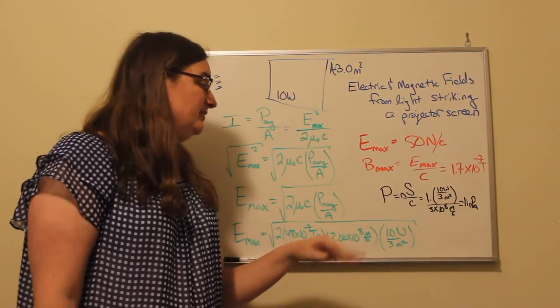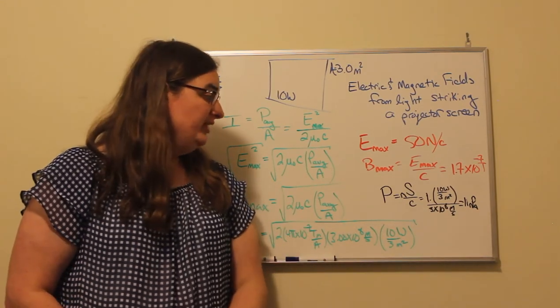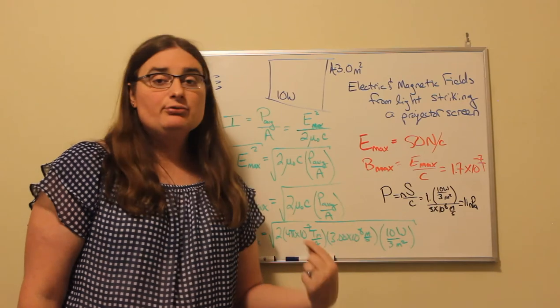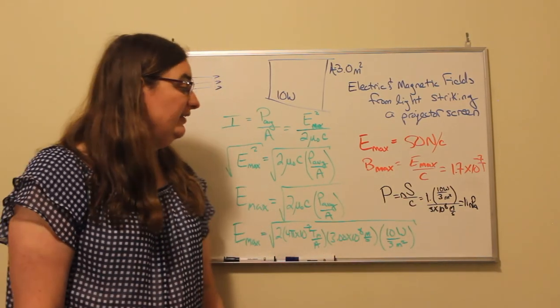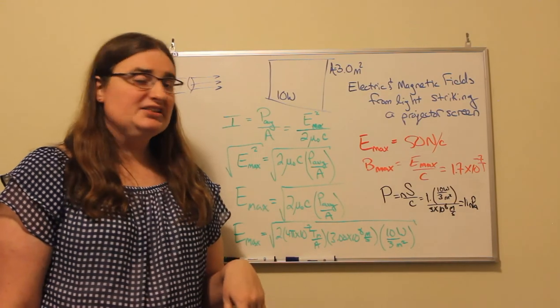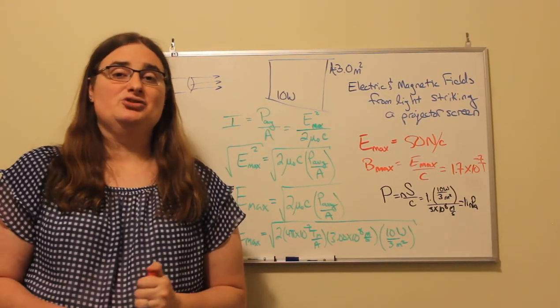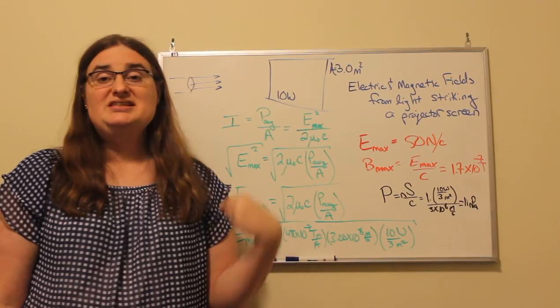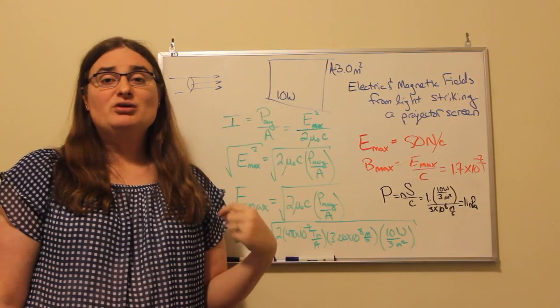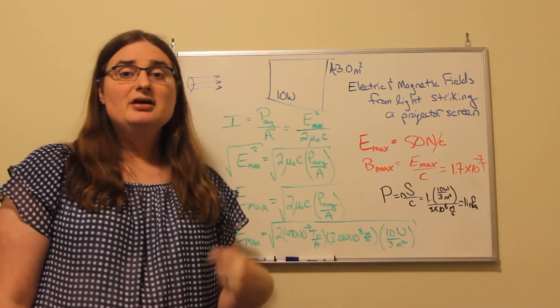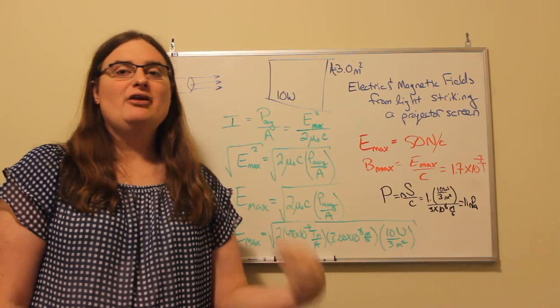So for a low end estimate, if the light would be completely absorbed by that screen, we would have our 3.33 watts per meter squared divided by our speed of light. So the pressure across that surface would be 11 nanopascals, 1.1 times 10 to the negative 8 pascals, which is about a factor of a thousand smaller than the smallest pressure change that our ears can register.